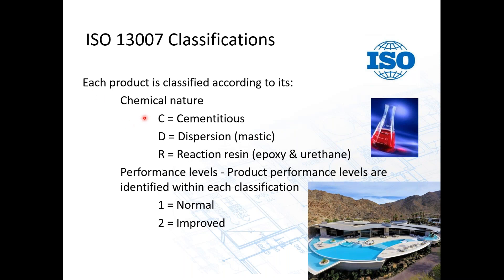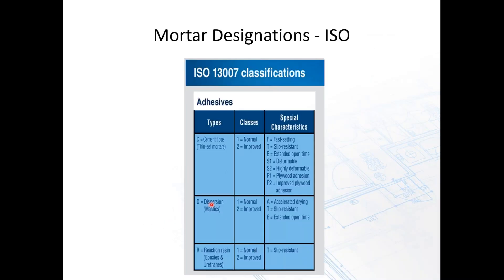Why does ISO matter? Because ISO created the recognized way of identifying mortars and the mortar designation system we use today in ANSI. They do it simply: three types of mortars by chemical nature — C for cement or cementitious, D for dispersion like a mastic, and R for resin reaction such as epoxies and urethanes. Then rated 1 for normal or 2 for improved. So C2 is an improved cementitious mortar. In addition, they have designation letters similar to ANSI — T for non-sag, F for fast setting, E for extended open time — plus some ANSI doesn't yet have: S1 for deformable and S2 for highly deformable, and P1/P2 for plywood adhesion.